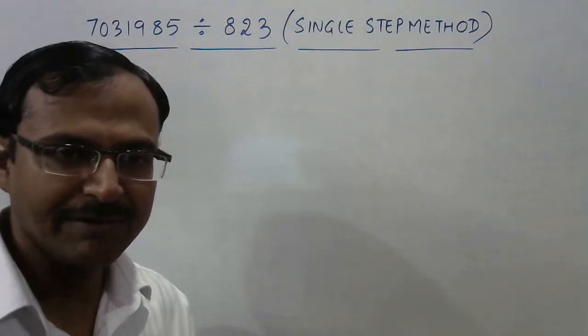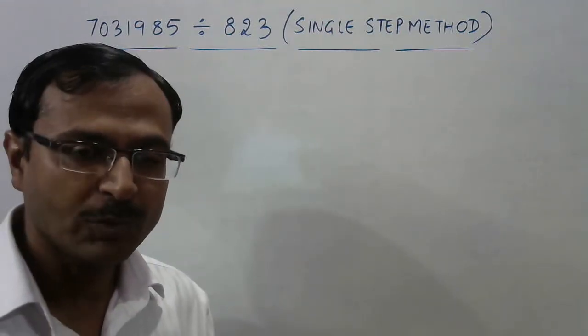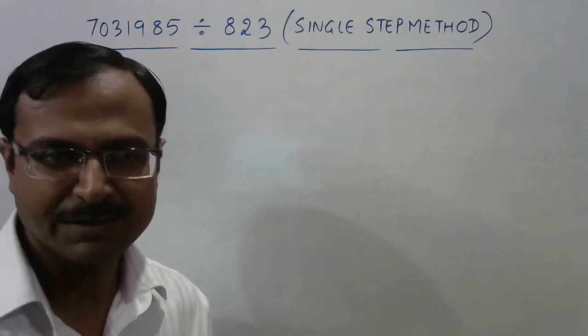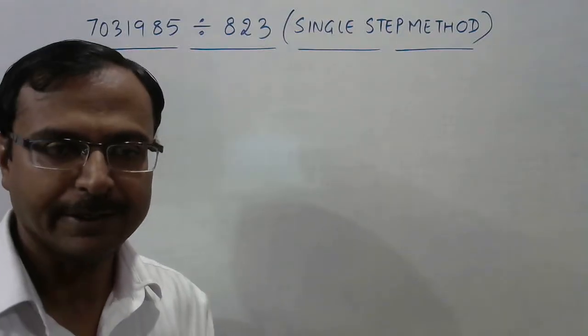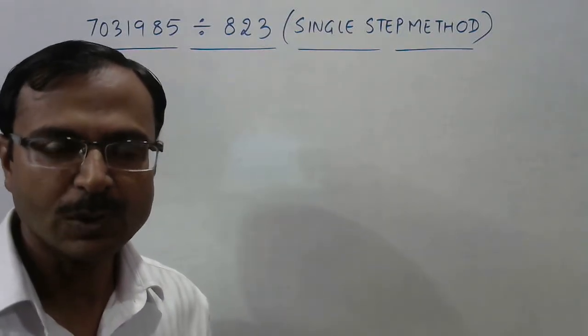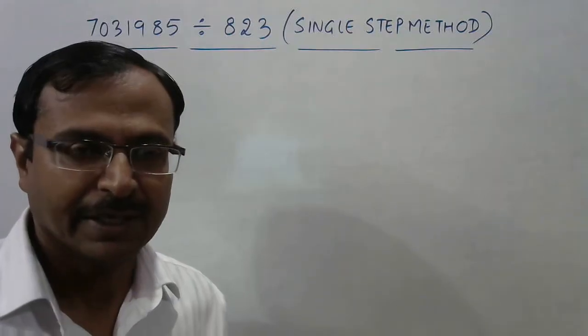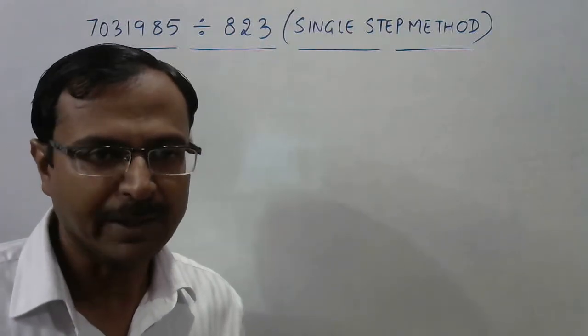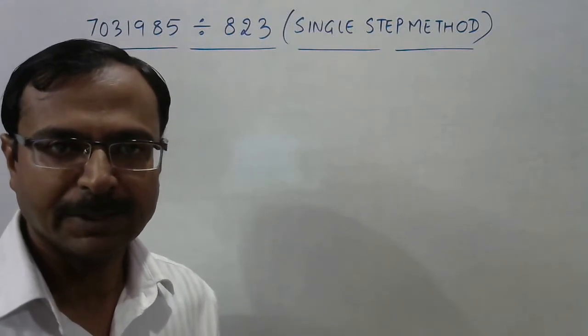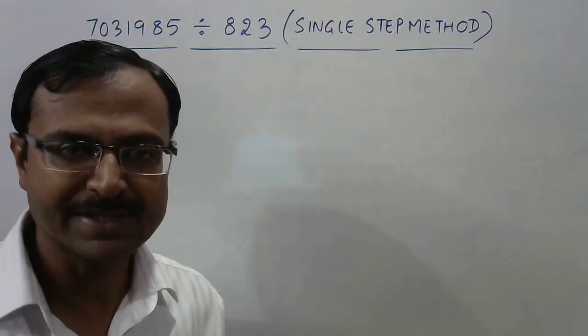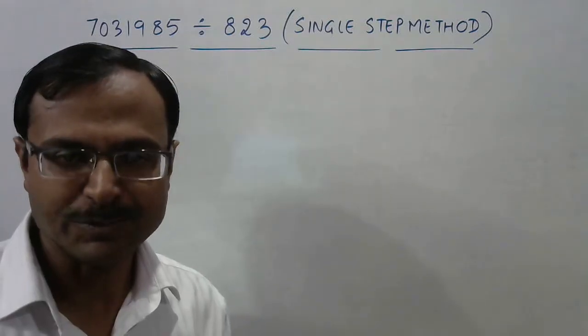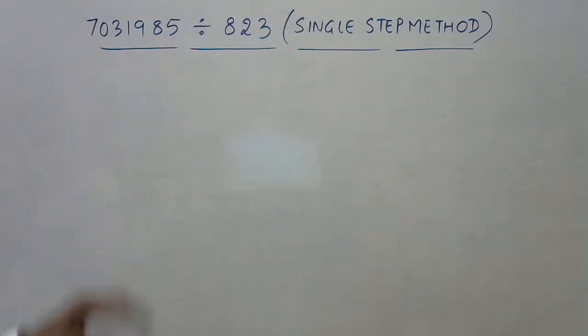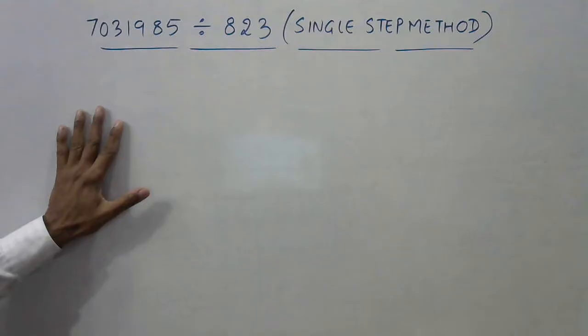Now here I have an example: 7031985 divided by 823. I'm going to perform this division using an amazing method. The preliminary video of this method I posted day before yesterday, and you can see that video on the cards. After that you can try more examples and get to a speed which is amazing when it comes to division.